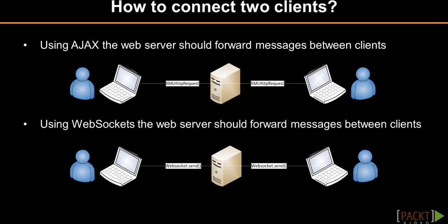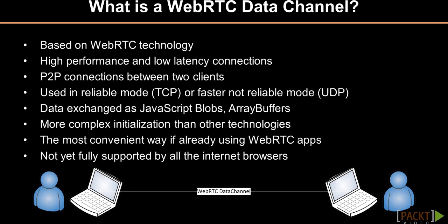So, what about connecting two clients through the just-seen technologies? As we can see from the example diagrams, both technologies require a centralized server that receives messages or data from a client and forwards that data to the other client. Let's analyze what is a WebRTC data channel. It's a WebRTC-based technology for high-performance and low-latency peer-to-peer connections between two clients. The data could be shared as blobs or array buffers. Even if the initialization is more complex than other technologies and not well supported from every web browser, it's the most convenient way if you're already using a WebRTC application.